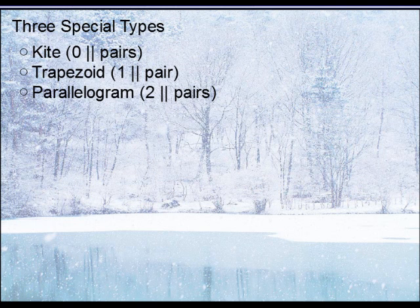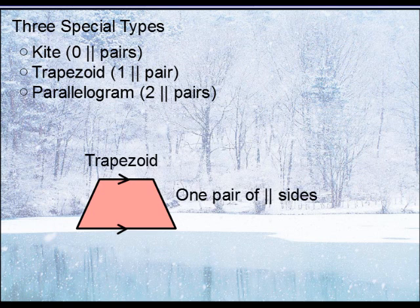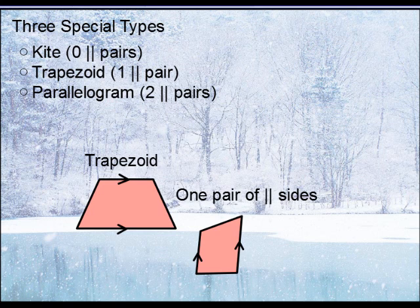The trapezoid, on the other hand, does have one pair of parallel sides. This is just one such example — all you need to have is one pair. It doesn't matter how many sides are congruent. You could have two sides congruent, or even three of them congruent, but it won't be equilateral. Here are a couple more examples.